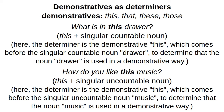Another example: 'how do you like this music?' Here 'this' comes before the noun 'music,' which is an uncountable noun. You cannot count music. But 'this' determines that the noun 'music' is used in a demonstrative way, so it is a demonstrative determiner used with a singular uncountable noun.